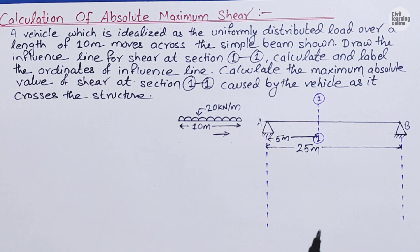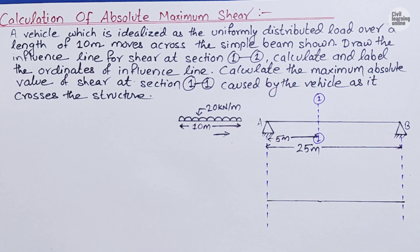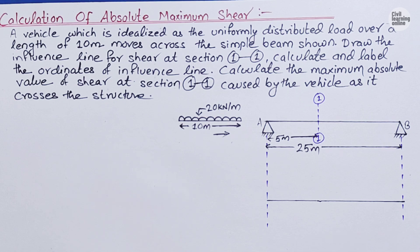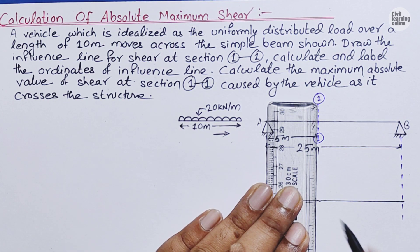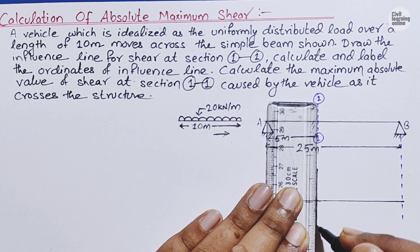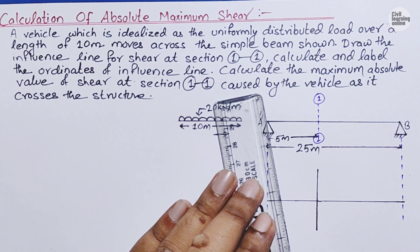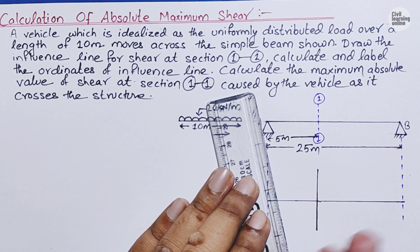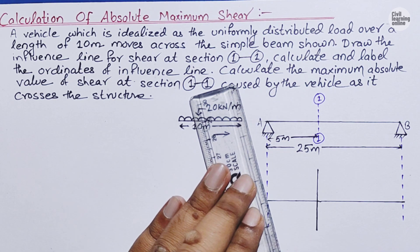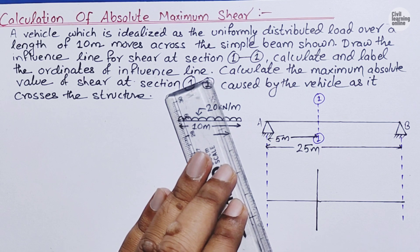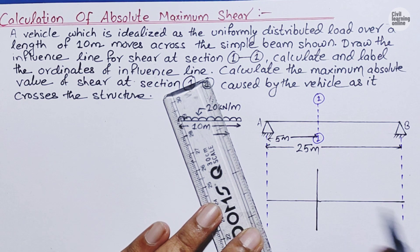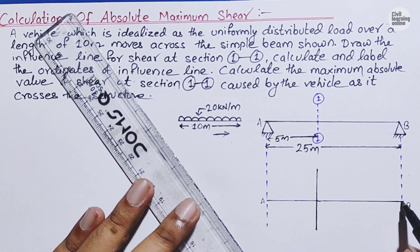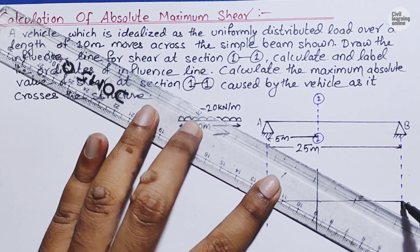I have drawn the baseline for the influence line diagram. Whenever you are solving any numerical and asked to calculate the shear at any section — whether denoted by section 11 or A, B, C, D — simply draw a straight line below that section. This is a trick. The influence line diagram is based on the position of the unit load along the span. If you want to learn this in detail, please check my previous playlist videos.